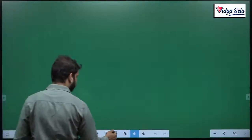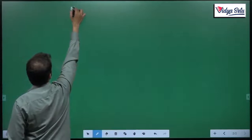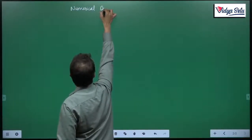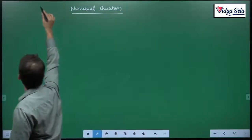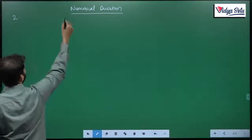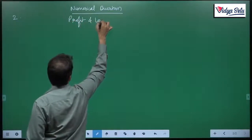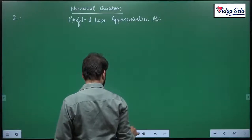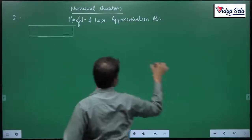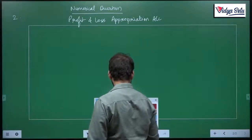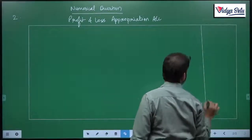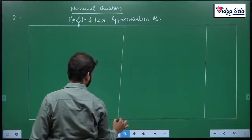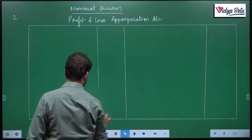So, this is numerical question, question number 2. After this, we have to prepare P&L appropriation account, so profit and loss appropriation account. Again, the format.